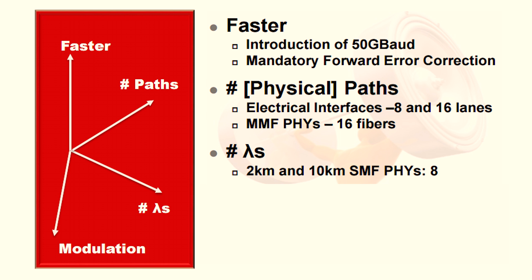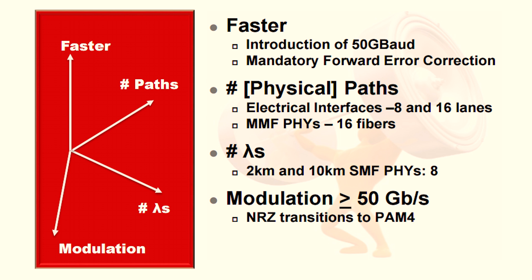The last axis is modulation — adding more bits per transmission. With NRZ, one transmits a single bit with each transmission, whereas with PAM4 you have two bits of information being transmitted. This effectively allows us to get more data across with each transmission.